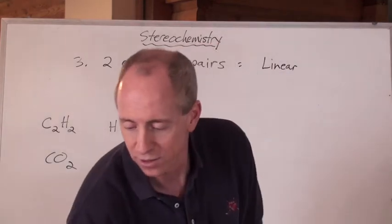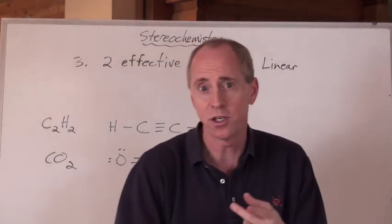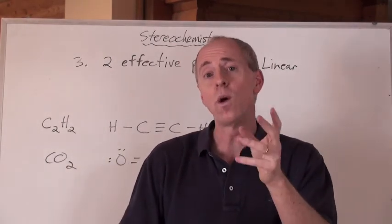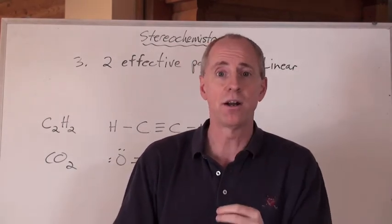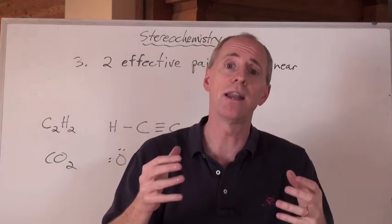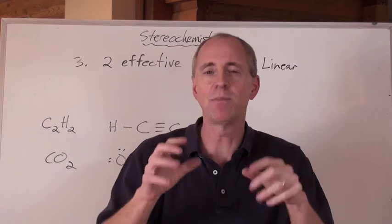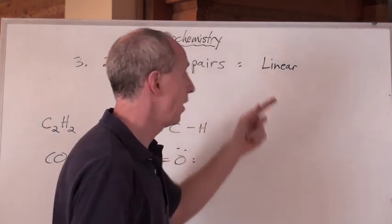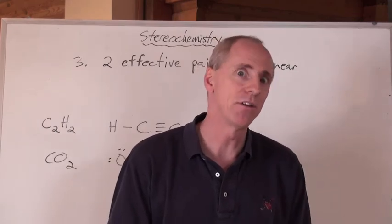So again, for four effective pairs, tetrahedral, pyramidal, you've got bent, and you've got linear. For when you have three effective pairs, trigonal planar, you can have a bent in there too as part of that shape, one of the shapes in that arrangement. But for the two effective pairs, you're going to get linear. Now there's other ones too.